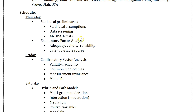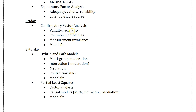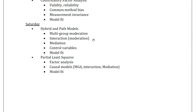The schedule roughly looks like this: we're going to get through some basic statistics just to make sure everybody's on the same page. Then we'll do an exploratory factor analysis. Friday we'll cover everything in confirmatory factor analysis, and then if we have time we'll jump onto Saturday's content. Saturday we'll do some latent causal modeling, path modeling, multi-group moderation, interaction, mediation, all that jazz.